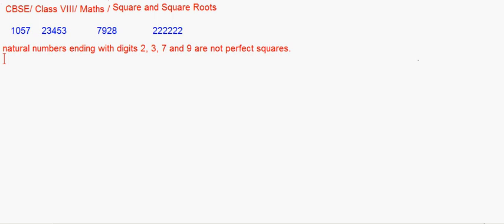Another type of question asks: what will be the unit digit of the square of a given number? For example, for 51, the unit digit is 1, and 1 × 1 = 1, so the unit digit of 51² is 1. For 54, the unit digit is 4, and 4 × 4 = 16, so the unit digit is 6.